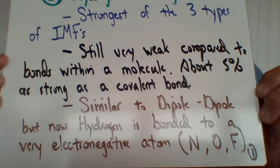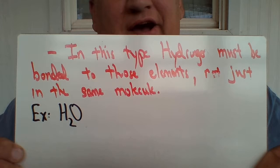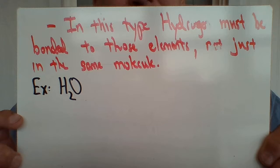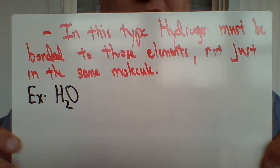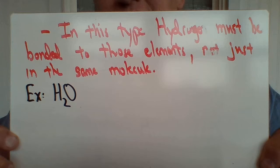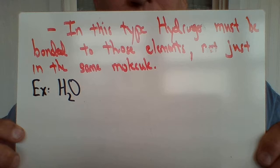You can't just have hydrogen anywhere in the molecule — the hydrogen has to be bonded to either nitrogen, oxygen, or fluorine for that molecule to participate in hydrogen bonding. It can't be that there's a hydrogen somewhere else and a nitrogen somewhere else; if hydrogen is not bonded directly to nitrogen, oxygen, or fluorine, then it's some other type of intermolecular force.